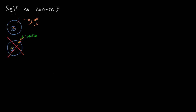By the way, we're talking about B cells here, but everything we're saying is equally applicable to T cells. T cells also have a T cell receptor that's generated at random, and you only want that T cell receptor to react to foreign, non-self things and not to self things. The processes we're going to talk about are equally true — maybe even more so — for T cells than B cells.